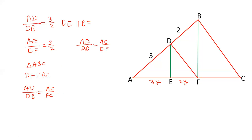And AD upon DB is given as 3 is to 2. So, AF and FC are in the ratio of 3 is to 2. AF is 3, FC is 2. Let's say this is 3z and this is 2z.